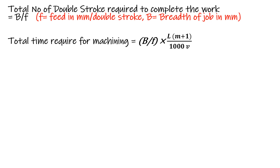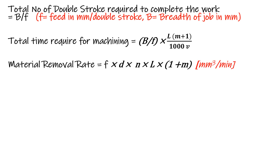To find the total time required for machining — how much time is needed to complete the job — it equals total number of double strokes multiplied by time for one double stroke. The equation is (B/f) × L(1+m) / (1000×v), and the answer is in minutes.